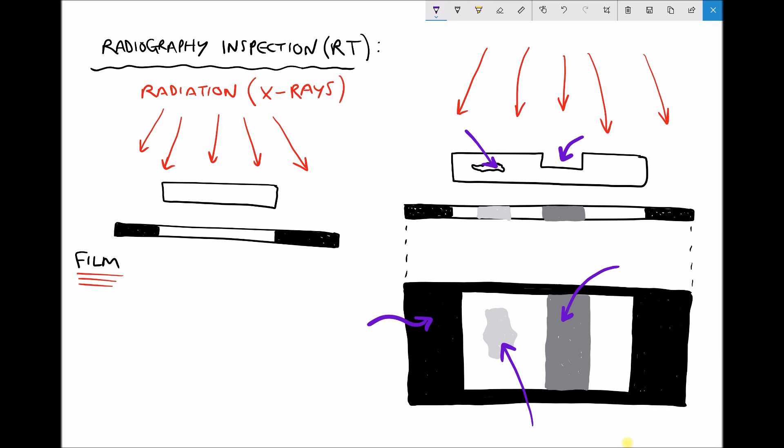So in actual fact a portable tester can be taken to site and rather than developing the image as a film testers are actually able to get instant feedback on a digital display. So although the initial outlay for equipment is relatively high we're able to generate results on site and we're able to generate results very quickly. So this certainly becomes a viable inspection technique.